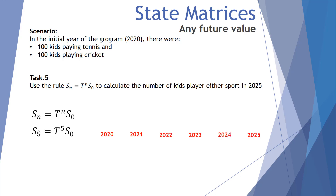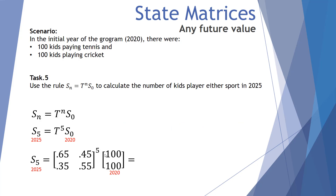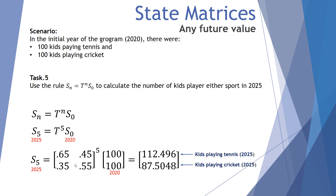From 2020 to 2025, thinking in terms of transitions: 2020→2021 is one transition, 2021→2022 is two, 2022→2023 is three, 2023→2024 is four, and 2024→2025 is five transitions. So we raise the transition matrix to the power of five and multiply by the initial state matrix. After five transitions — the year 2025 — we have approximately 112.9 kids playing tennis and 87.5 playing cricket.